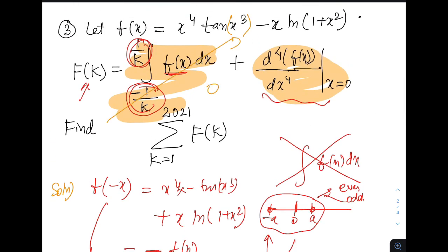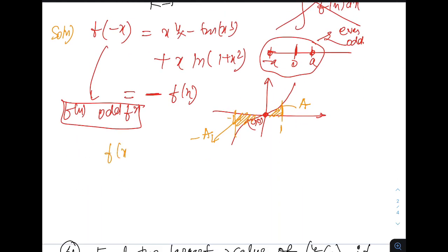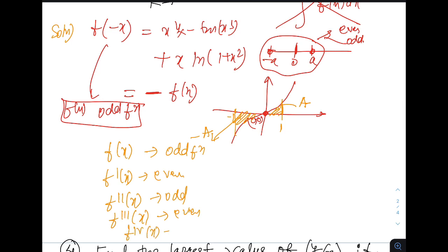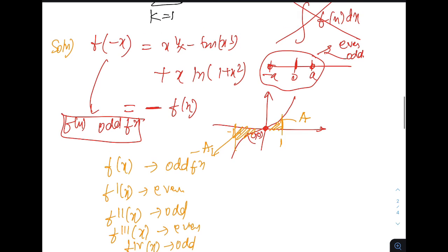Now what about the fourth derivative? Do I need to differentiate it fourth time? Well you may do but that's not the smart way. Since we already know f of x is an odd function, so its derivative will be even. Now since f dash x is even function, so again its double derivative will be odd. Since double derivative is odd, so its triple derivative must be even. Since triple derivative is even, so its fourth derivative must be odd.